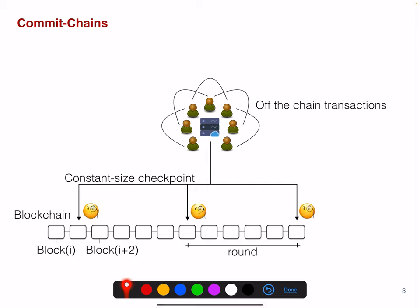You can have a fraud-proof-based scheme where a user will inspect whether a checkpoint correctly represents their balances. If the balance written on-chain is not accurate and not well-formed, the user can perform a challenge or initiate a complaint towards the operator by calling a special function in the smart contract. Or you could have a validity-proof-based scheme, where the operator needs to perform some kind of proof that what's written on-chain is correct and corresponds to what users specified off-chain.